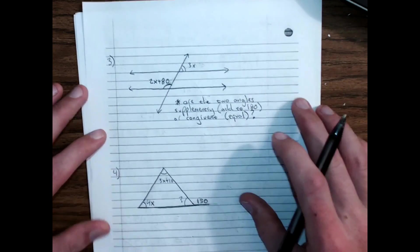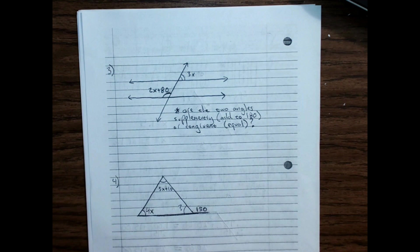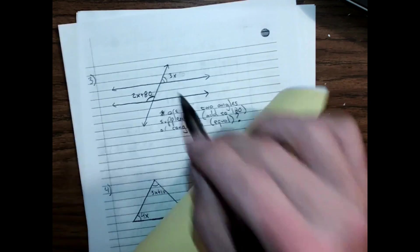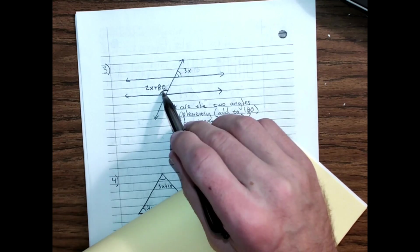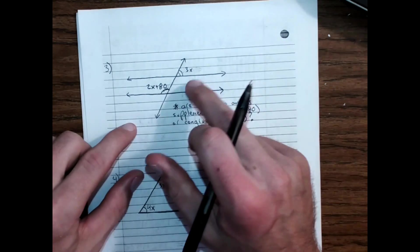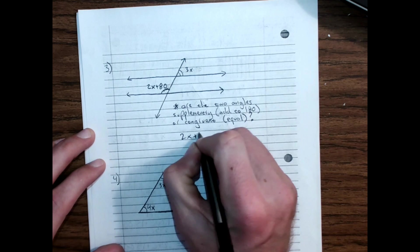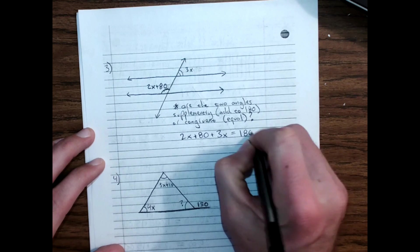Here's angle relationships. The two are supplementary. We can check our angle notes that I just sent out in their mind. 5 and 2. Those two are supplementary. Those add together to equal 180. 2x plus 80 plus 3x equals 180 degrees.